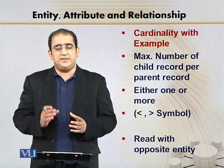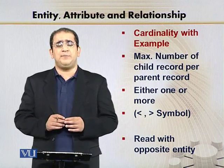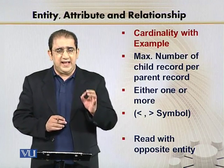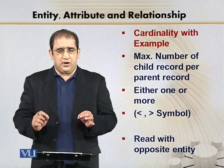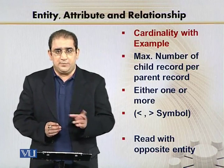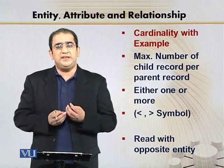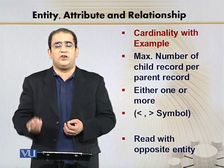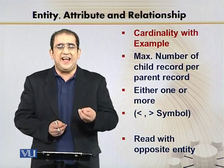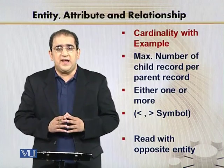Simple — ke hamare paas agar ek table A hai aur doosara table B hai, cardinality hame ye batata hai ke ek record ke against — agar parent table ka hai — parent table ke ek record ke against maximum number of records in a child table kitne aa sakte hain. To ab dekha — jo optionality thi jo discuss ki, woh basically bata rhi minimum number of records, aur cardinality hai woh basically aap ko bata rhi maximum number of records — zyada se zyada record child table mein kitne aa sakte hain, kisi ek parent table ke ek record ke against. Yahi basically cardinality ka concept hai.